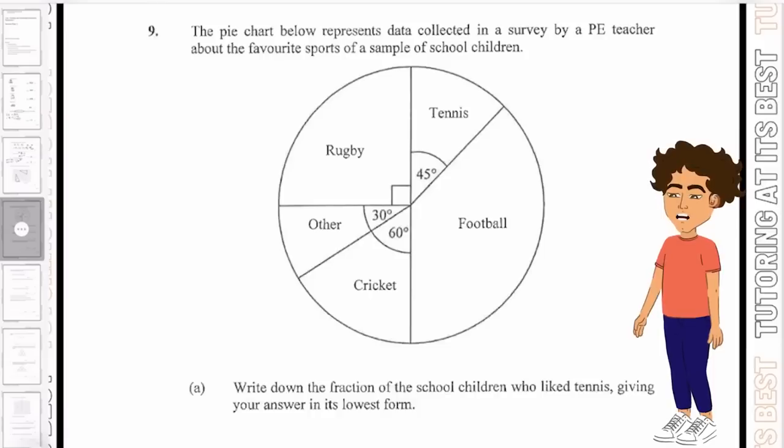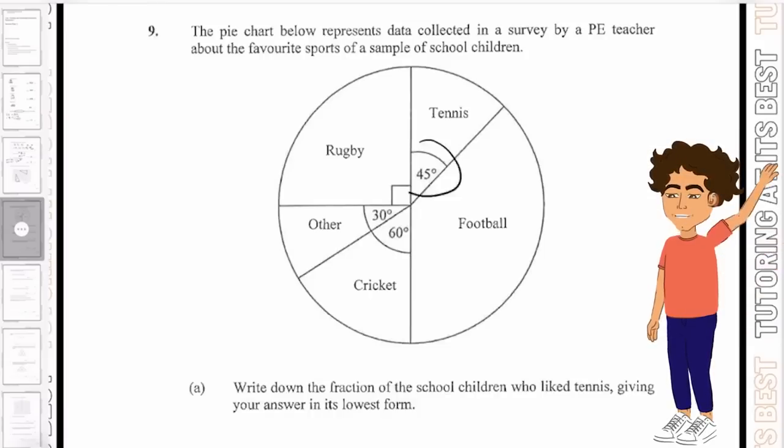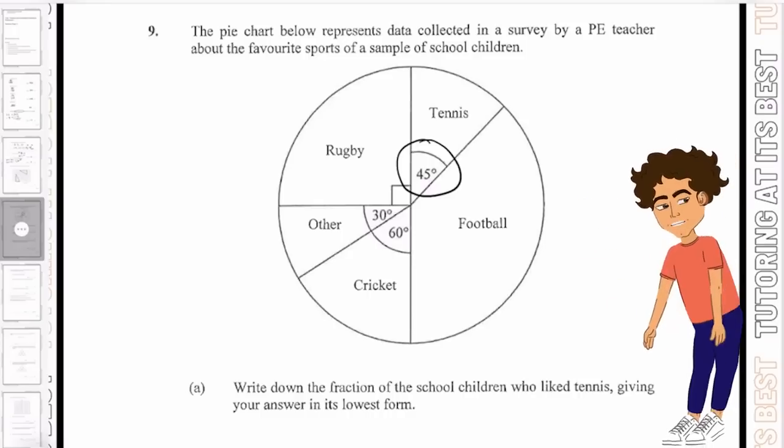The first thing we're going to do is find out the value of our tennis. We can see that it's going to be 45 degrees out of 360 degrees, because the total degrees in a circle adds up to 360 degrees.